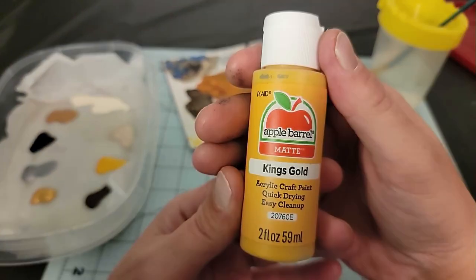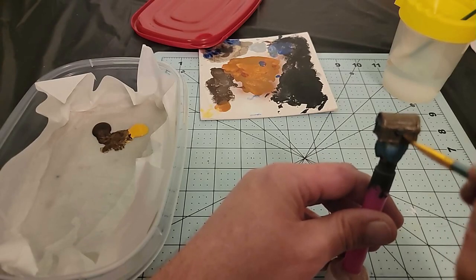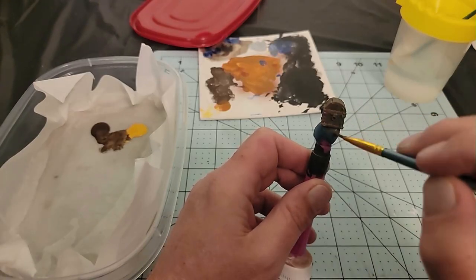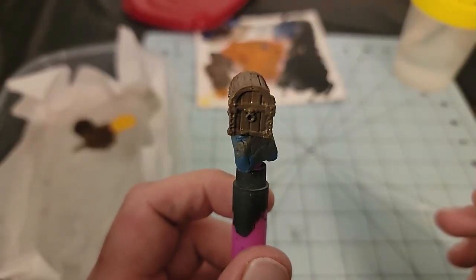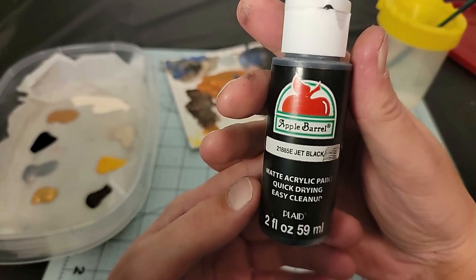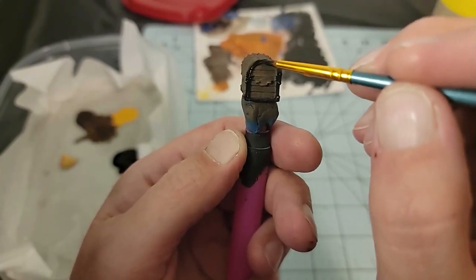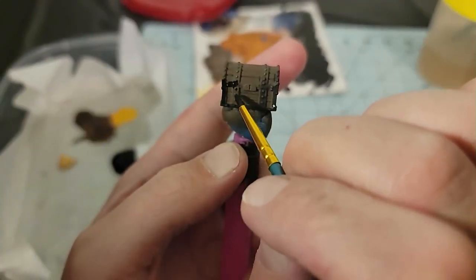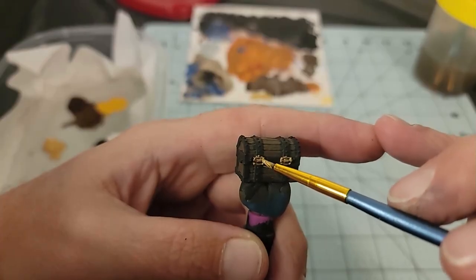Then I took some burnt umber and King's Gold and mixed them together to make a yellowish-brown color for the chests. After adding a couple thin layers, I used some gold and black paint for the details, specifically black for the metal bands and gold for the hinges, locks, and handles of the chests.